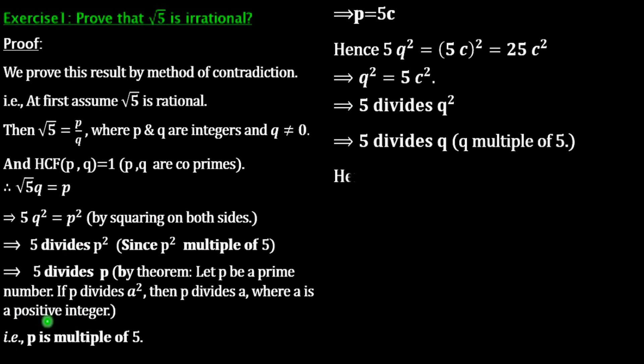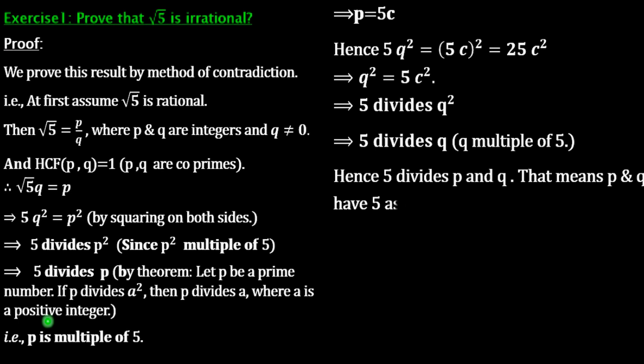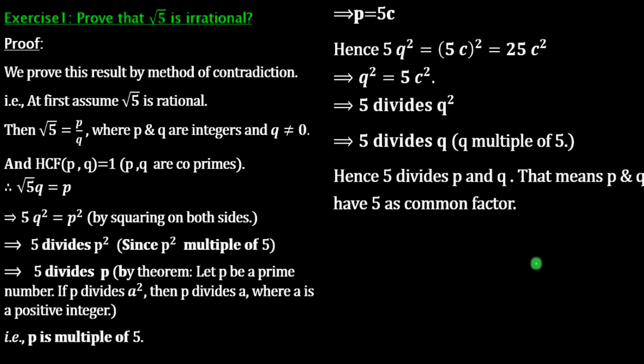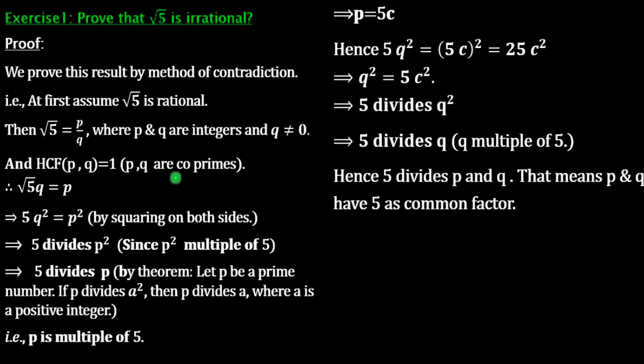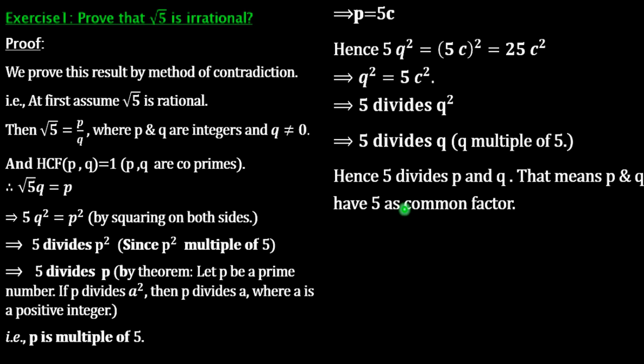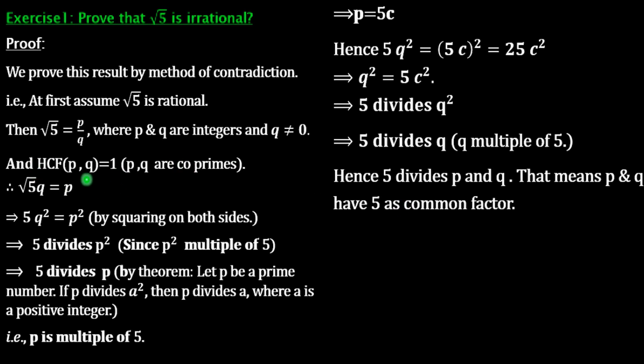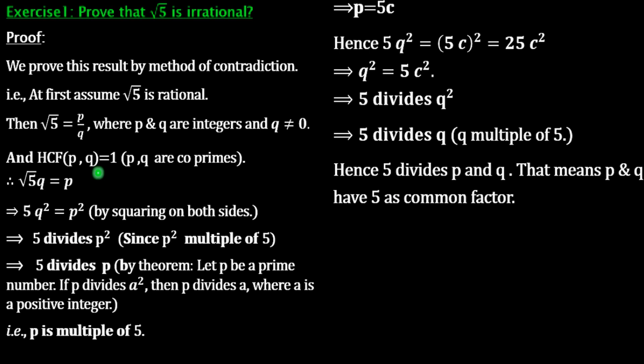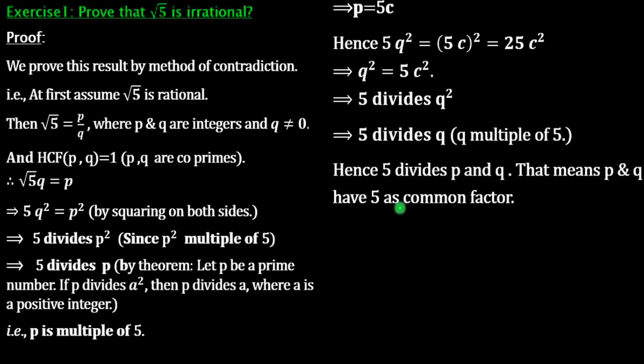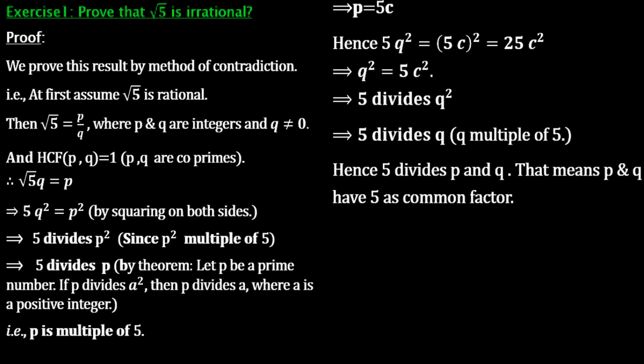Which is a contradiction to the fact that HCF of P and Q is 1. That is, P and Q have another common factor, which is 5. If 5 divides P and 5 divides Q, then P and Q have a common factor, 5. That is, what is our assumption? What is our definition here? HCF(P, Q) = 1. But in here, we got the highest common factor is 5.